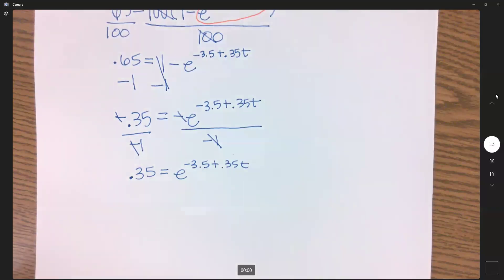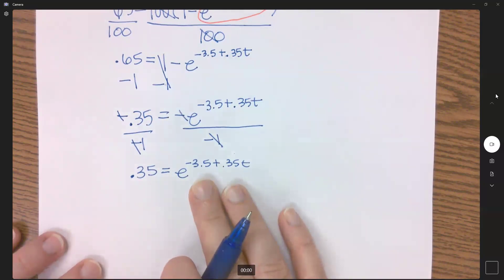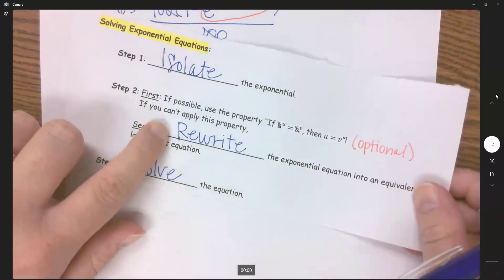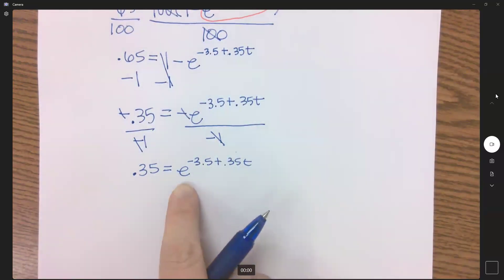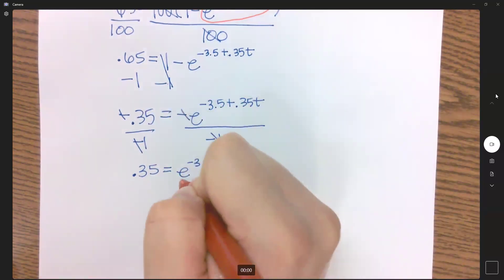I know this seems like a lot of stuff, but we're just doing normal algebra solving equations here. I have finally isolated my exponential, and so now we can rewrite it. An exponential with the base of e rewritten will become a natural log.